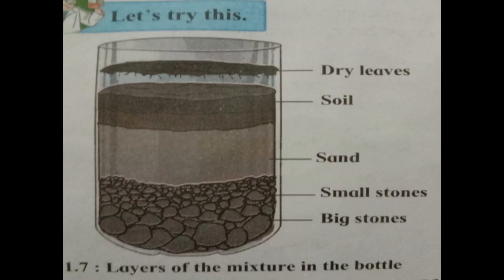Here various types of layers are formed. The top layer is dry leaves. The second layer is soil. The third layer is sand. And the bottom layer has small stones and big stones.